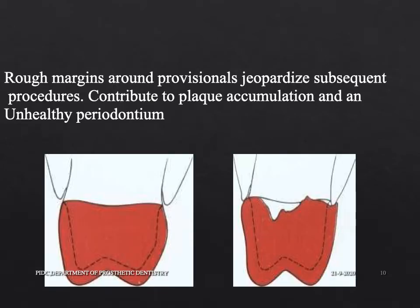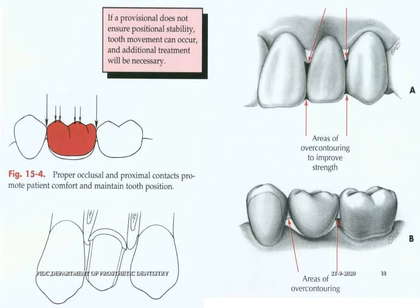This slide shows a provisional restoration with rough margins which may jeopardize subsequent procedures by contributing to plaque accumulation and resulting in an unhealthy periodontium. Provisional restorations should ensure positional stability, because tooth movement can occur, and in cases where it does, additional treatment will be necessary. Areas of over-contouring or areas in relation to the connector may need to be slightly enlarged to prevent breakage of the provisional restoration.